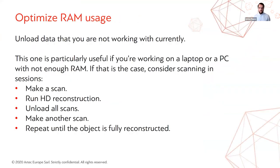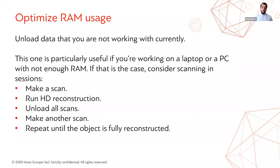Best practice number four: optimize RAM usage. Unload data that you're not currently working with to free up RAM — this is particularly useful on a laptop or PC with limited RAM. Consider scanning in sessions: make a scan, close the tab, run HD reconstruction, unload scans, save the project, then repeat. You can also disable 3D rendering in the View menu to free up extra gigabytes, which can make the difference between being able to run Fusion or not.